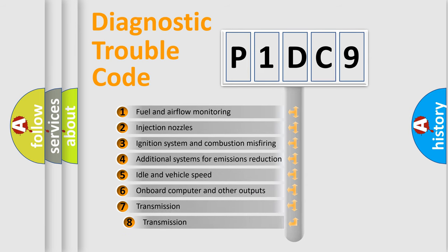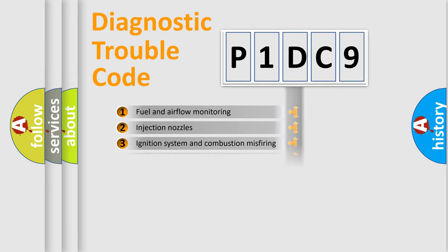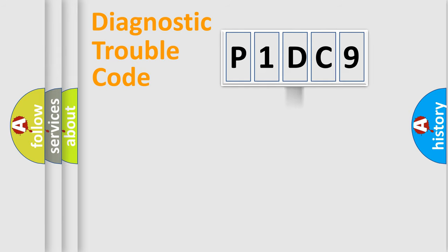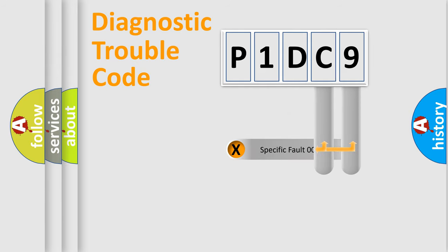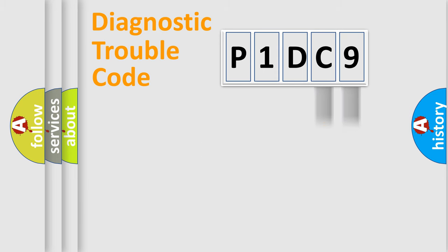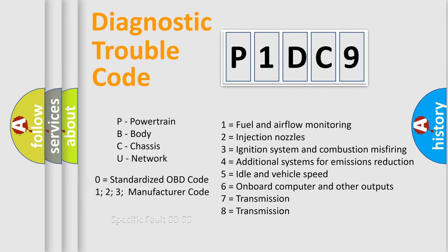The third character specifies a subset of errors. The distribution shown is valid only for the standardized DTC code. Only the last two characters define the specific fault of the group. Such a division is valid only if the second character code is expressed by the number zero.